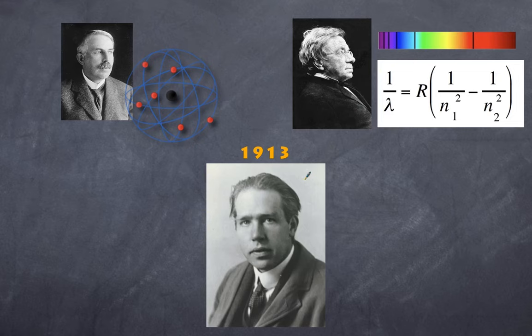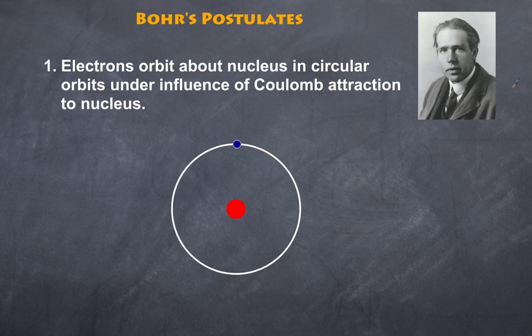Balmer wasn't able to explain it, but as we've come to see, Niels Bohr is able to explain that. Bohr basically came up with some key postulates. The first thing that Bohr postulated is that the electrons orbit around the nucleus in a circular orbit under the influence of Coulomb's attraction to the nucleus. In that regard, we are no different to what Rutherford already stated.